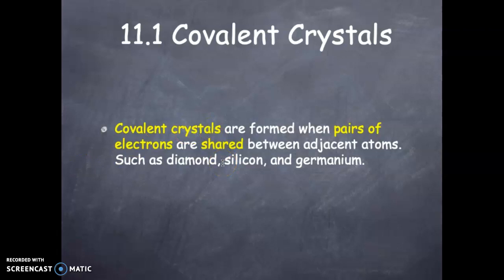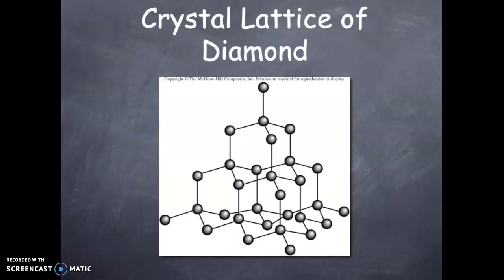Covalent crystals are formed when pairs of electrons are shared between adjacent atoms, such as diamond, silicon, and germanium. A crystal lattice of diamond with this regular pattern and space, lots of space between the carbon atoms. But still, this zigzag pattern makes this a very strong material.